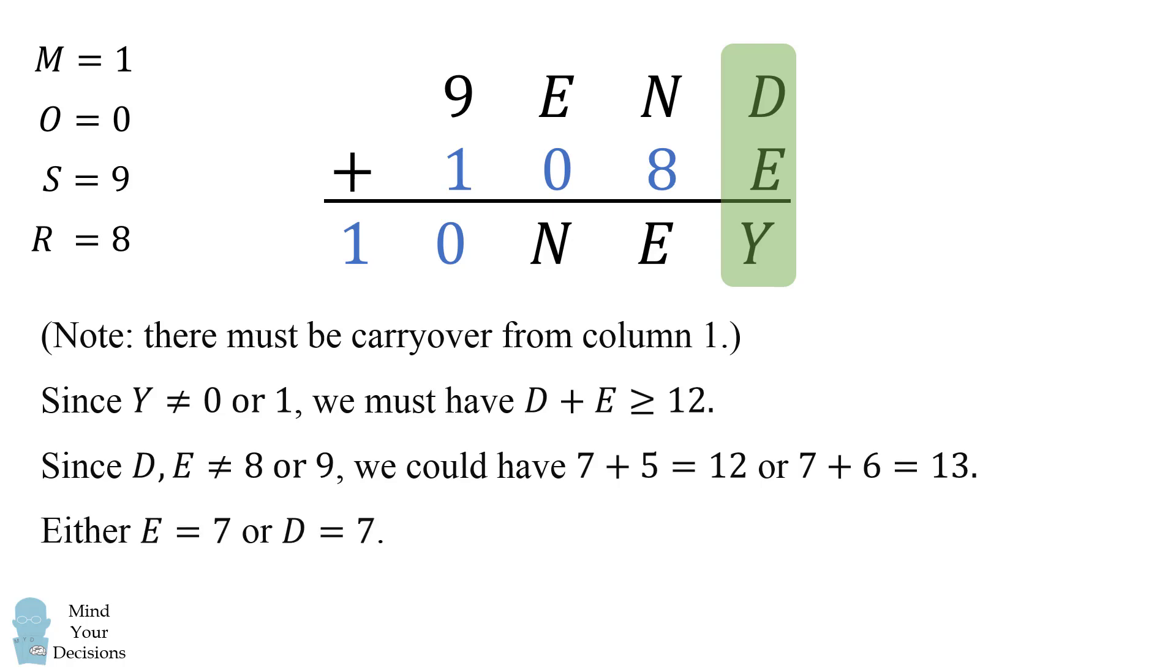Now suppose that E is equal to 7. In that case, E plus 1 will be equal to 8, which is equal to N. But this is not possible since R is equal to 8. So we can eliminate that E is equal to 7.